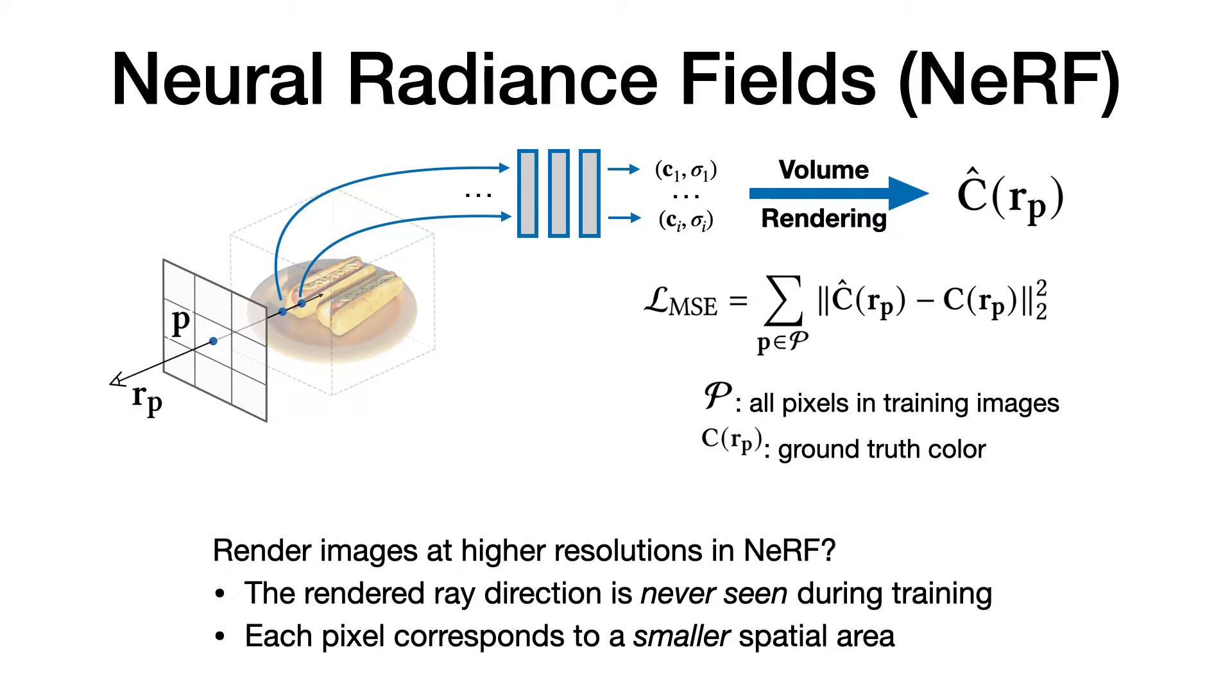To train a NeRF, we sample P from all of the pixels, denoted by capital P here, in our training images, and cast rays Rp through the pixel centers, and derive its color c(Rp) through volume rendering. Then the mean squared error of predicted pixel color and ground truth color is minimized to optimize the neural network. It's not hard to find that NeRF has the property of rendering arbitrary scale images, thanks to the MLP representation. But what would happen if we actually do this?